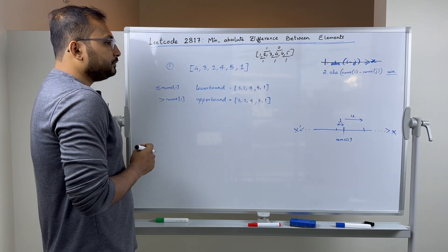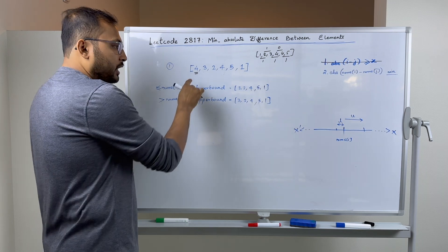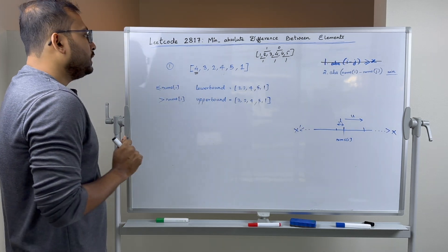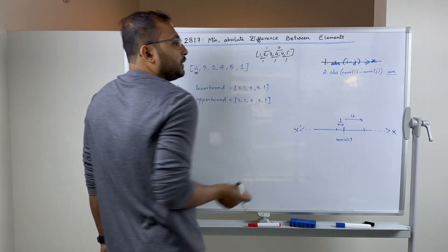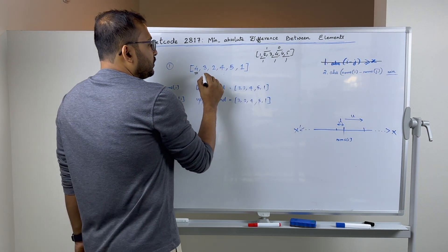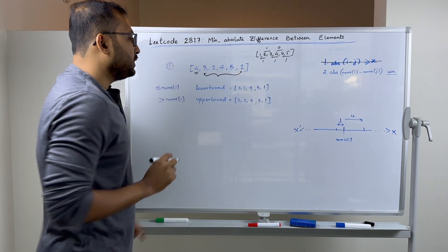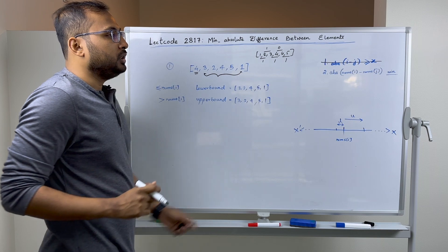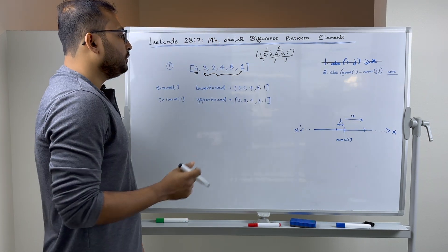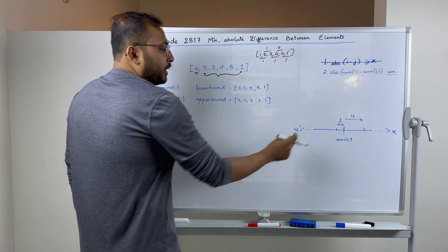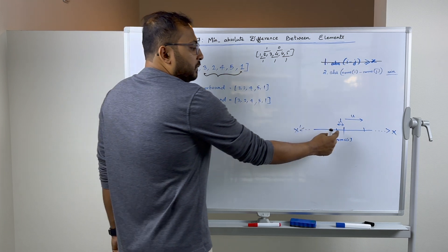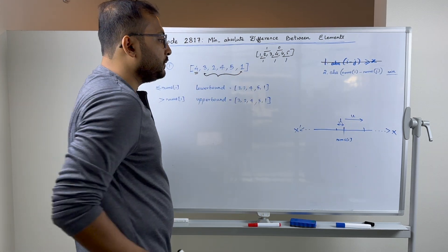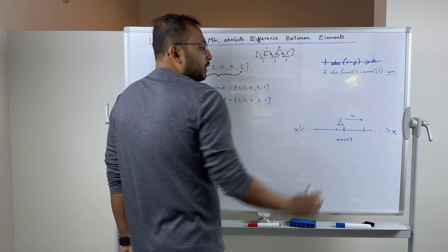One approach: consider this index as nums[i], meaning this particular index is part of the answer. Now what are the possible values of nums[j]? nums[j] can be anything in the remaining subarray. To make the difference minimum, I have to find the number closest to nums[i]. For the difference to be minimum, I take the lower bound — the element less than or equal to nums[i] that is closest to it — or the upper bound, the element greater than nums[i].